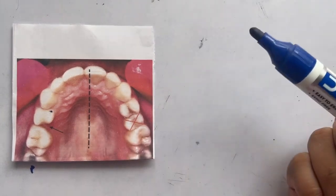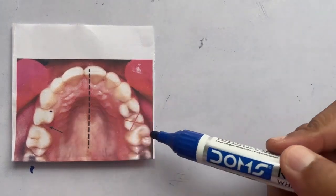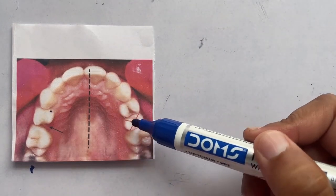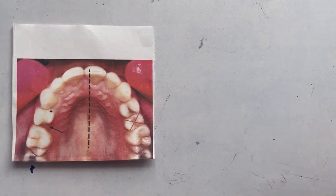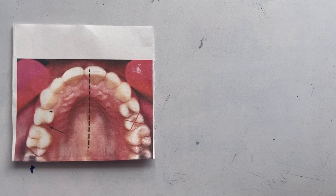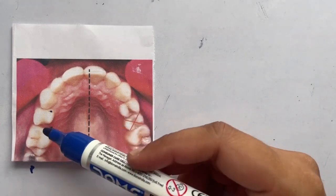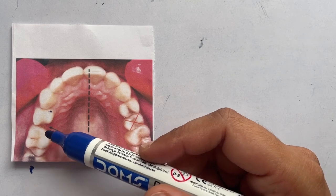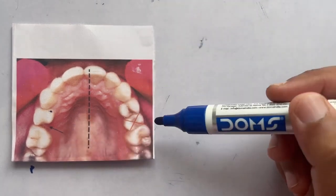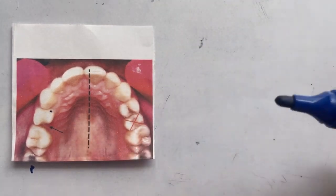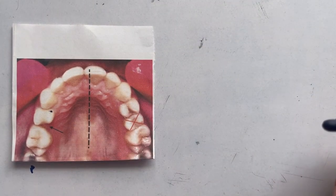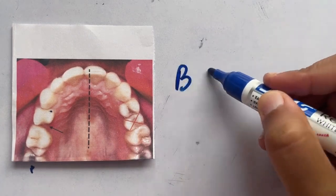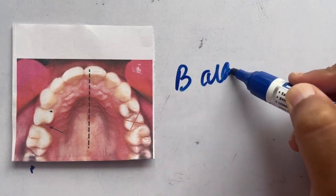To balance that, here comes balanced extraction. We'll have to extract the opposite teeth of the same arch. If we have extracted the second premolar on the right side, then we'll have to extract the second premolar on the left side as well to maintain balance. Hence, this is known as balanced extraction.